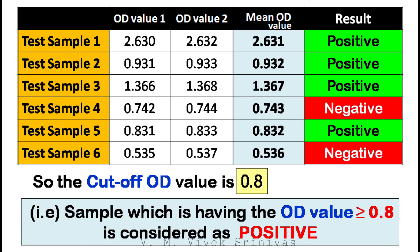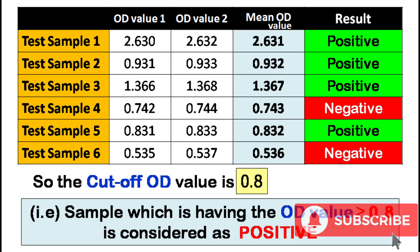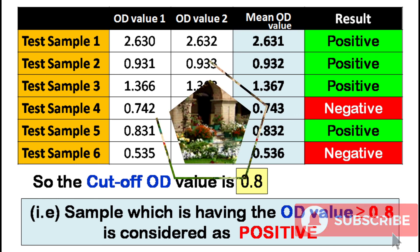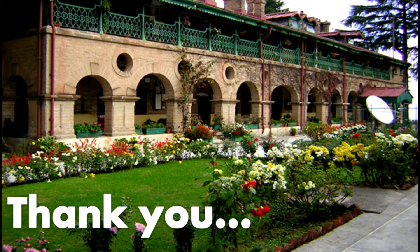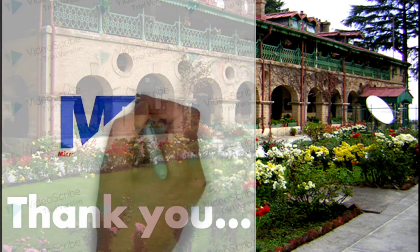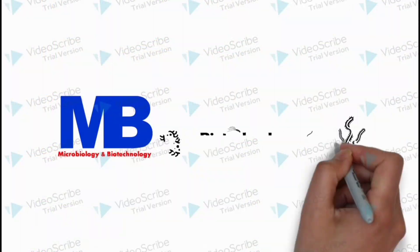This is how the ELISA results are analyzed. With this, we are coming to the end of ELISA and its types. In the next video presentation, we will discuss in detail the agar gel precipitation test. Hope the lecture is informative and useful. Thank you.